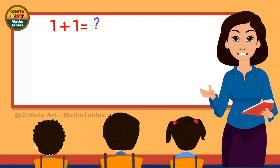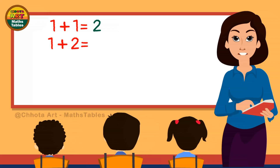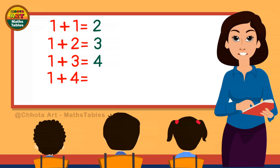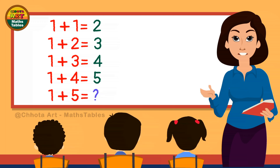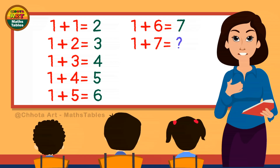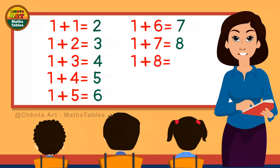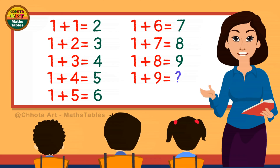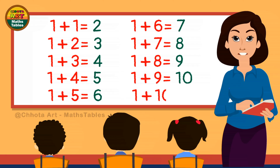1 plus 1 is 2. 1 plus 2 is 3. 1 plus 3 is 4. 1 plus 4 is 5. 1 plus 5 is 6. 1 plus 6 is 7. 1 plus 7 is 8. 1 plus 8 is 9. 1 plus 9 is 10. 1 plus 10 is 11.